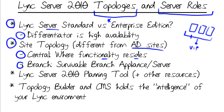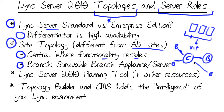Lync supports a hub-and-spoke architecture in which that one central site can be associated with one or more branch sites. The idea is that we have a remote location with a WAN link to the central site. That WAN link is important because the main functionality in Lync is contained in the central site. So if you have a branch location and just can't get reliable WAN connectivity to the central site, you'll need to break out another central site. You can contain multiple central sites and multiple branches in a single Lync Server 2010 deployment.